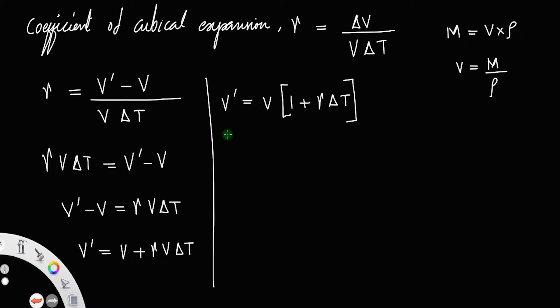So final volume will be the mass divided by final density equal to initial volume will be mass by initial density times 1 plus gamma delta T. This mass and this mass will get cancelled.